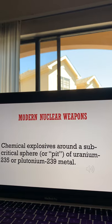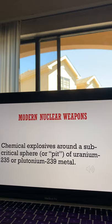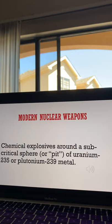Modern nuclear weapons work quite differently because instead of colliding subcritical pieces of nuclear fuel, these new weapons use chemical explosives around subcritical spheres of uranium-235 or plutonium-239 metal. The force from the blast is directed inward, compressing the pit and bringing its atoms closer together. Once it's dense enough, the neutrons are injected, initiating a fission chain reaction and producing an atomic explosion.